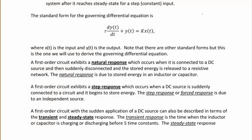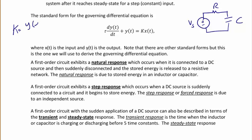An example of an RC circuit would be a voltage source, a resistor, and a capacitor. The standard form for the governing differential equation is tau dy(t)/dt plus y(t) equals K x(t), where x(t) is the input — that could be the voltage source — and y(t) is the output. y(t) could either be the voltage across the capacitor or the current through the resistor and capacitor. So since K is the steady state gain, the output over the input, K would be equal to y(infinity) over x(infinity), where y and x could be voltages or currents. Note that there are other standard forms for the differential equation, but this is the one we will use in this class.